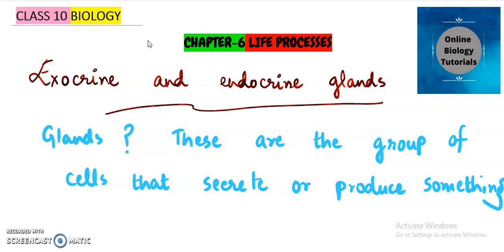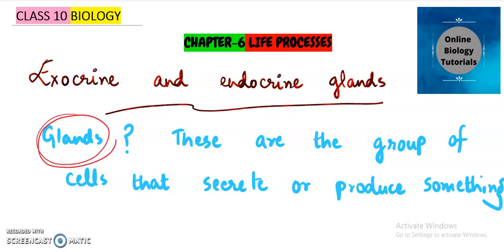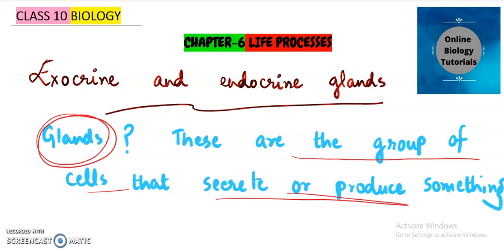We must know what is the difference between both. So, what are glands? First of all, we should know what are glands, then we will study the types of it. Glands are actually the groups of cells that secrete or produce something. Whenever any group of cells assembles together, they may work as glands if they are producing something.